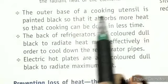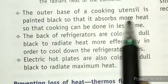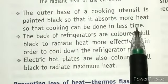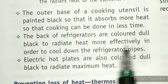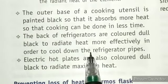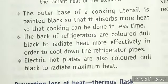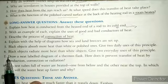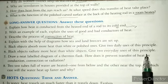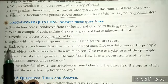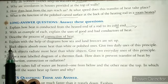Additional uses of this principle: the outer base of cooking utensils is painted black so it absorbs more heat, allowing cooking in less time. The back of refrigerators is also colored dull black to radiate heat more effectively and cool down the refrigerator pipes. Electric hot plates are also colored dull black to radiate maximum heat. The same concept applies to the next question about black objects radiating more heat than white objects.